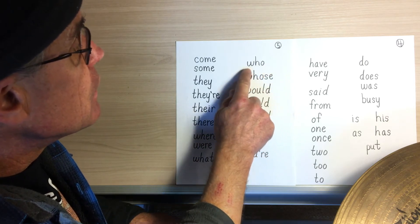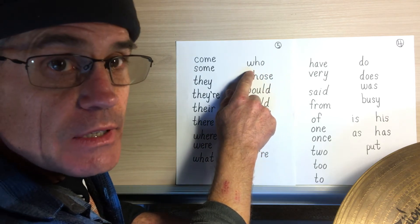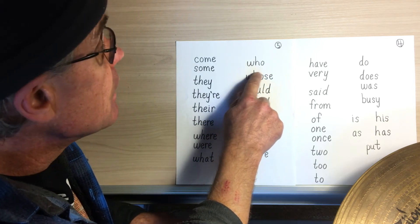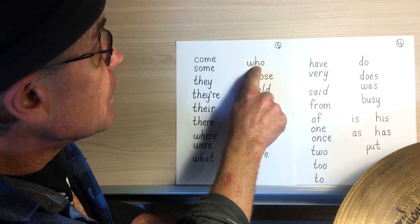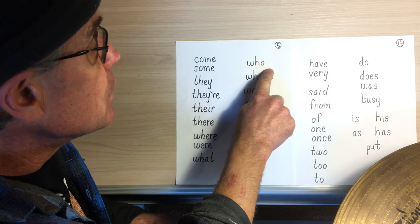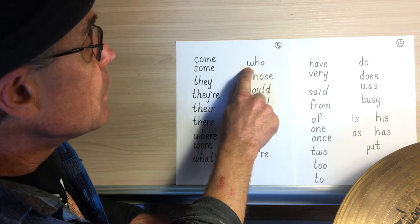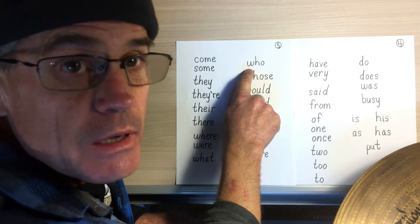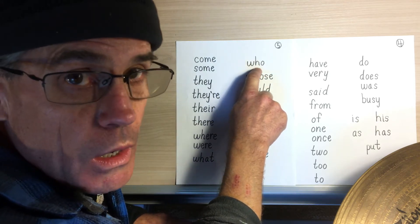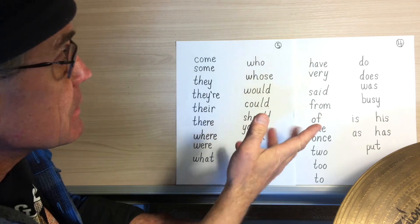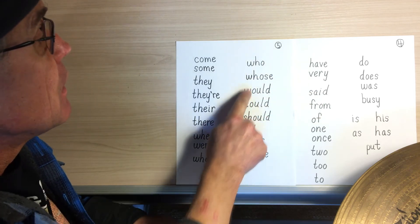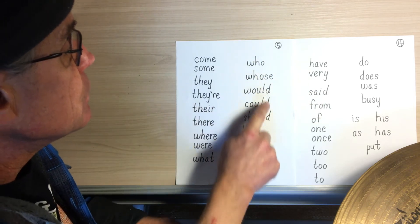Who — you can't even hear the W, and this says 'oo.' Instead of 'wuh-ho,' which is what it looks like it says, it says 'who.' Who's.